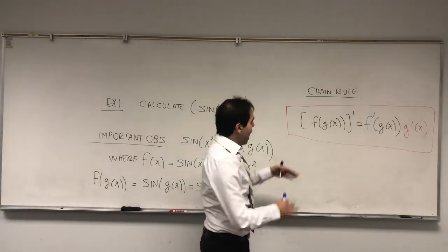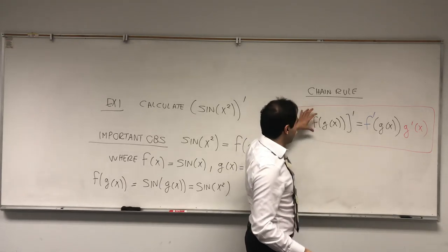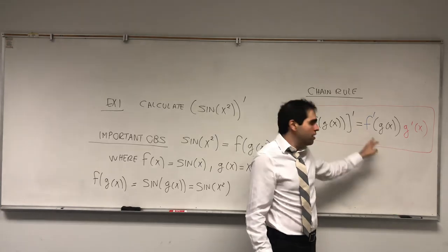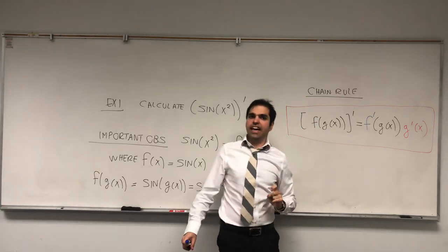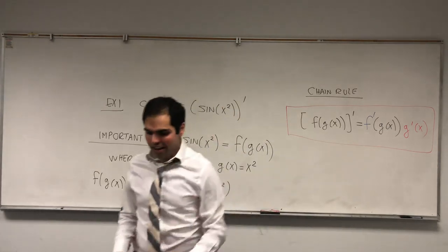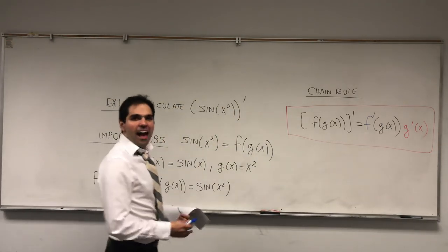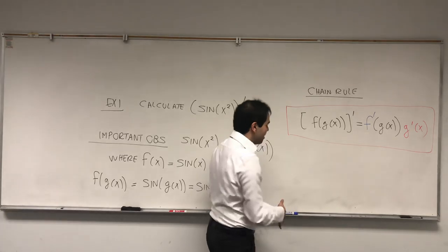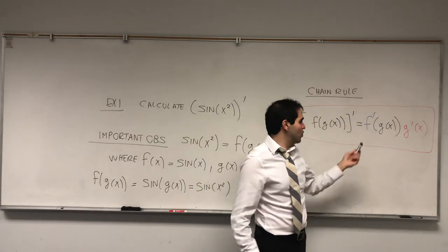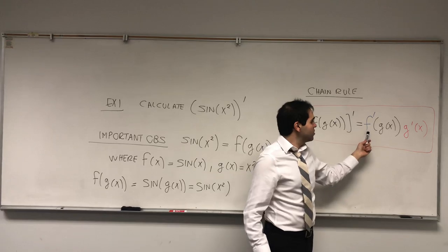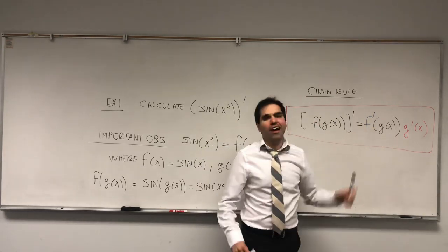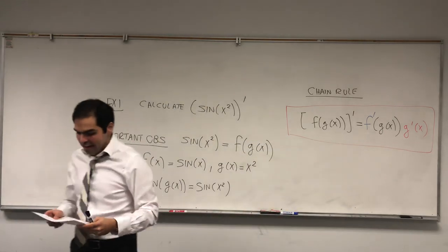I want to tell you the way I think about the chain rule: it's like cracking a walnut. How do you eat a walnut? You first crack the outer shell, which is f prime, and leave the inside intact. And then you eat the inside walnut. Why is it called the chain rule? Because you're really taking a chain of derivatives — you're multiplying two derivatives together.